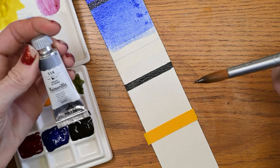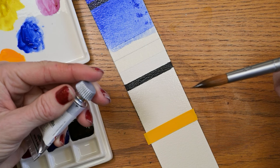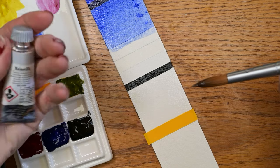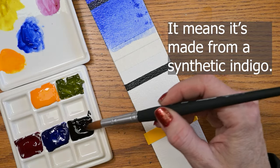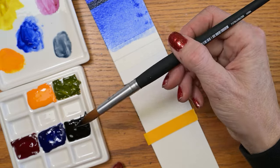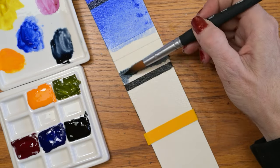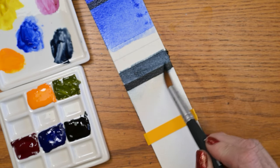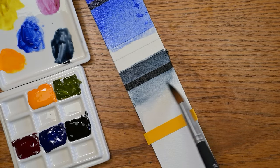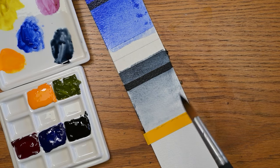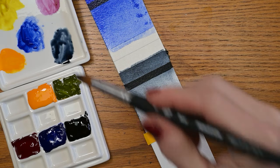This one is Payne's Gray, semi-transparent, three-star lightfast rating, and it says it's an indigo synthetic vat blue one staining. So I'm not really sure what that means as far as pigment, but maybe I'll look it up and stick it on the screen. Oh pretty. Yeah, it's setting up already, which is good news. It moves in water beautifully. Some cat hair - that's always helpful.